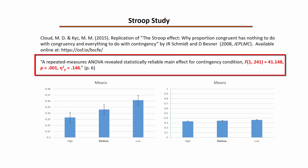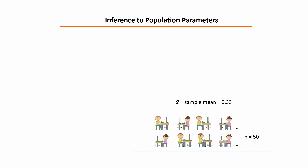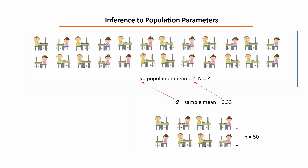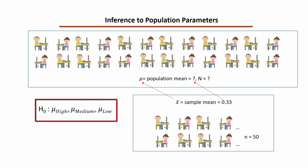What is the inference being sought by the researchers with this analysis? In this case, it is the inference to population parameters. We have a sample of 50 students with an observed mean equal to 0.33, and we treat this sample mean as an estimate of the population mean. We are trying to make an inference from the observed mean of 0.33 to the unobserved population mean, as is clear when we look at the null hypothesis for the repeated measures ANOVA — the three population means are expected to be exactly equal.